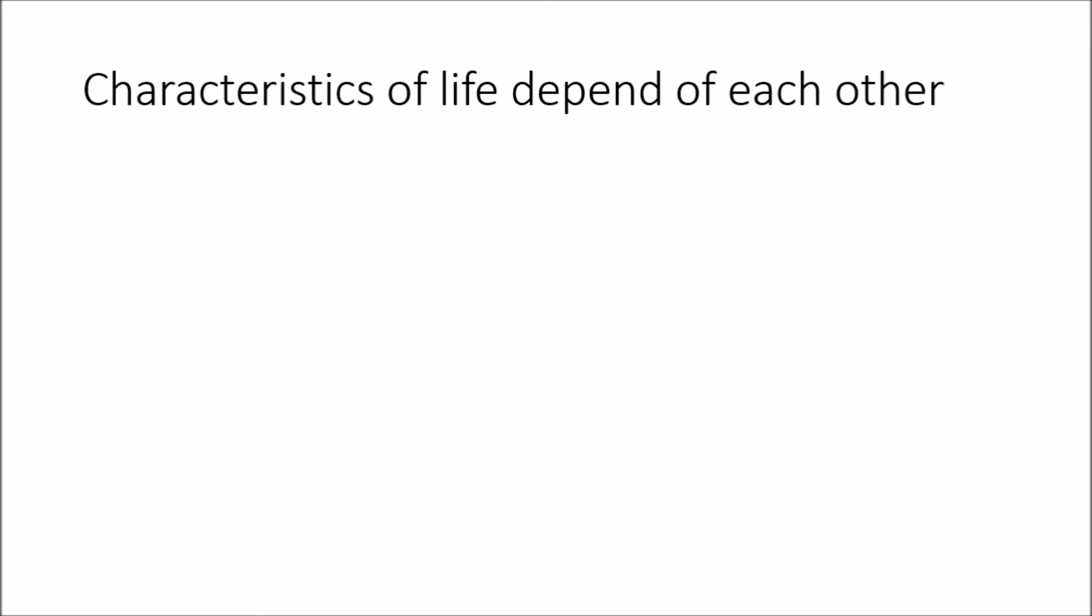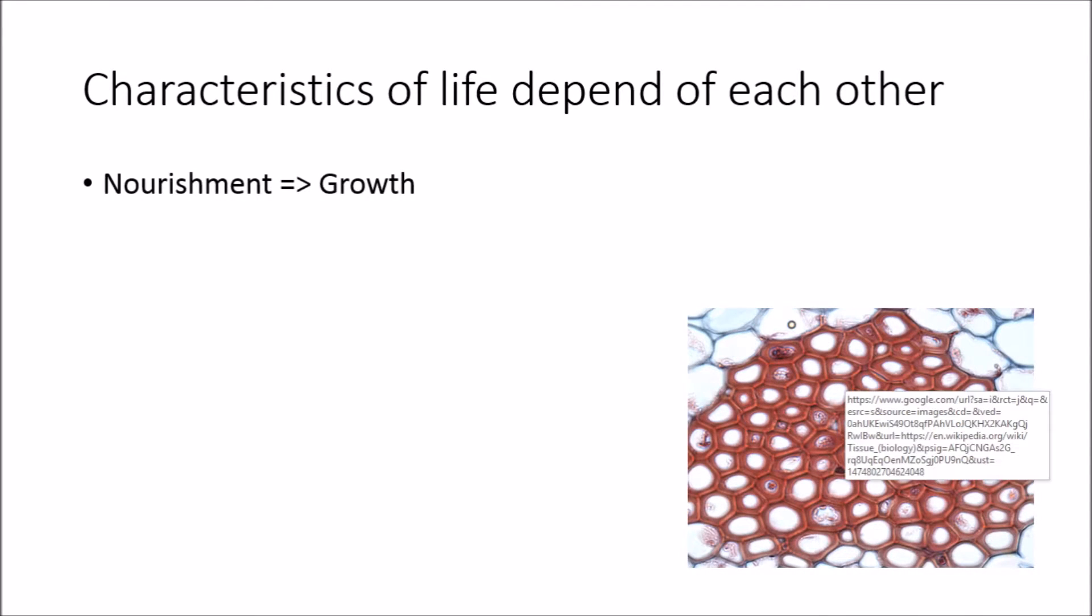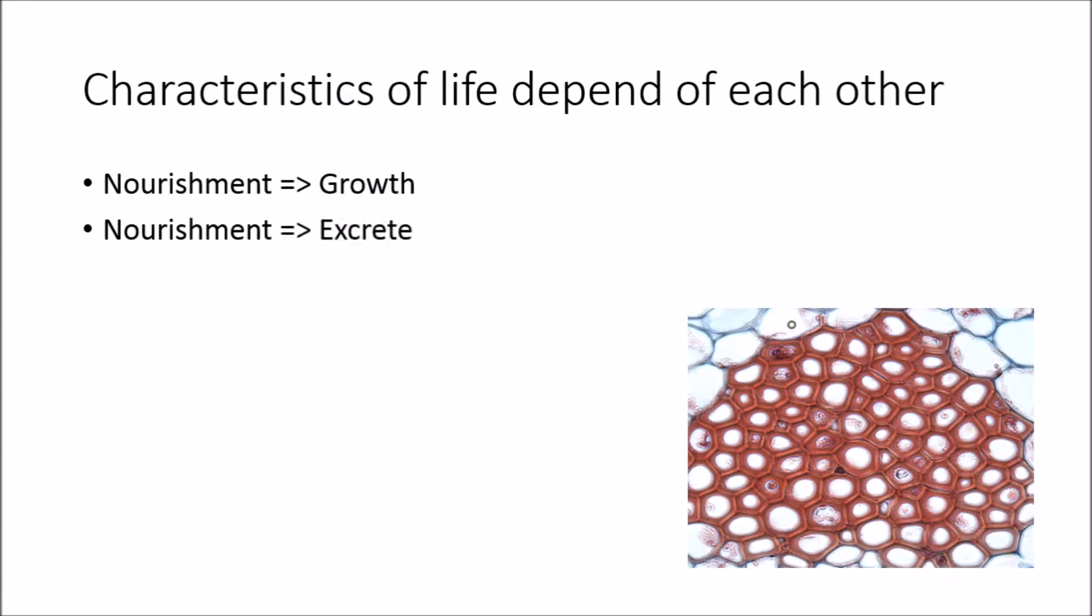Characteristics of life depend on each other. As you can see, each of the characteristics of life is linked to each other. For example, organisms can only grow if they are nourished and they can only excrete when they are nourished.